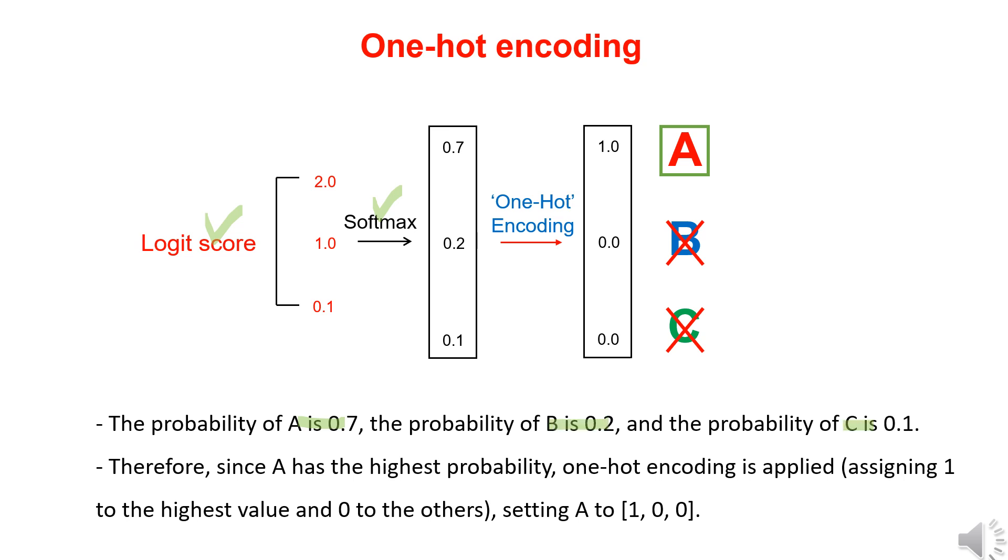Next, through one-hot encoding, we select the class with the highest predicted probability, assign 1 to that class, and assign 0 to the remaining classes. Since A has the highest probability, we assign 1 to A, and assign 0 to the remaining classes, B and C.